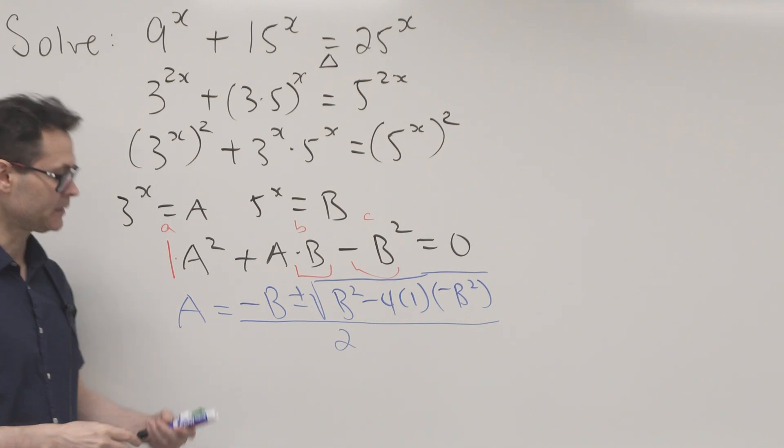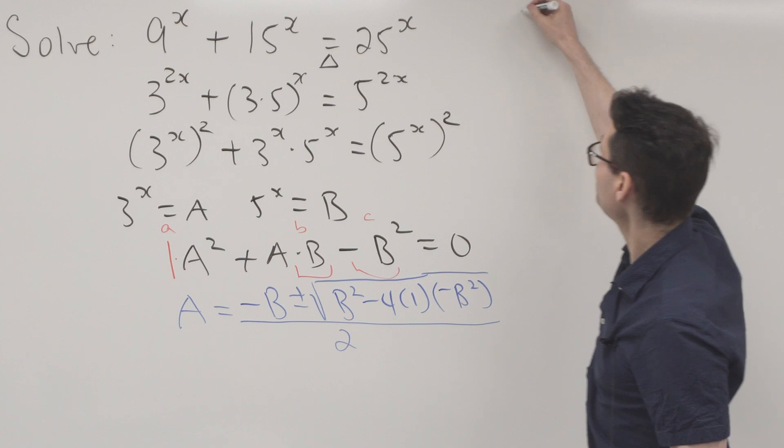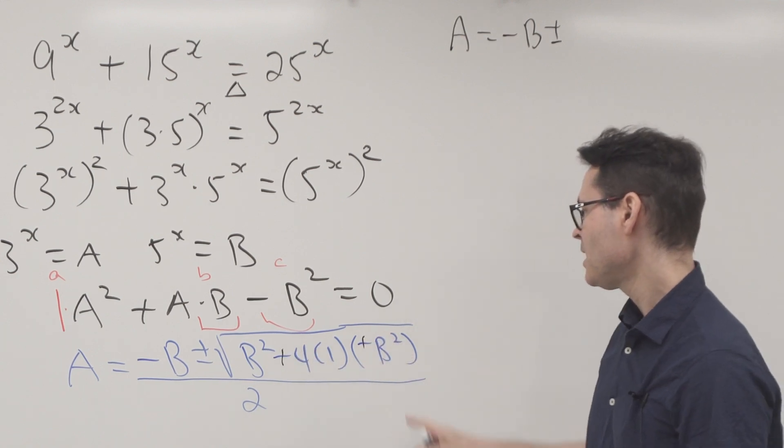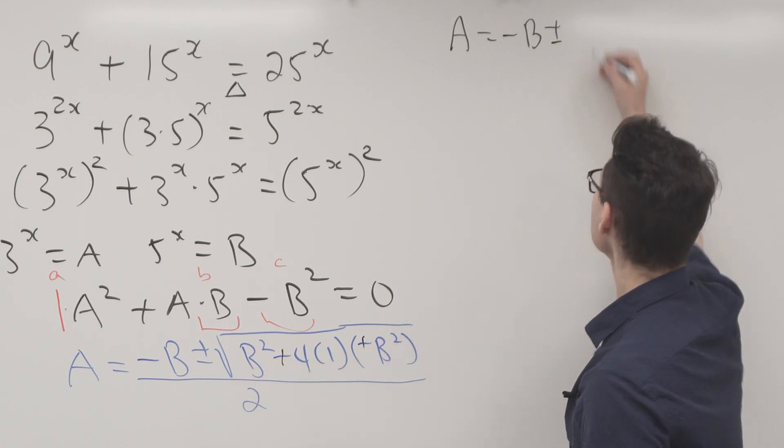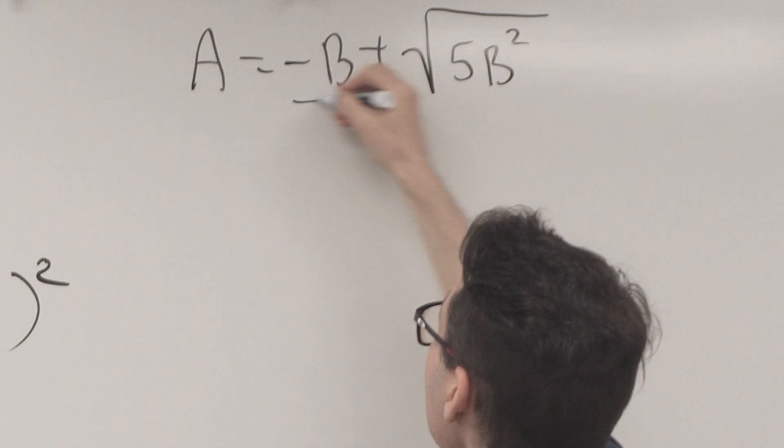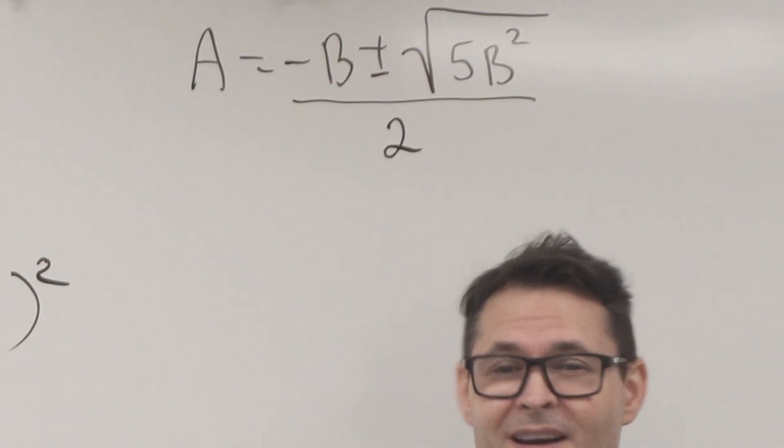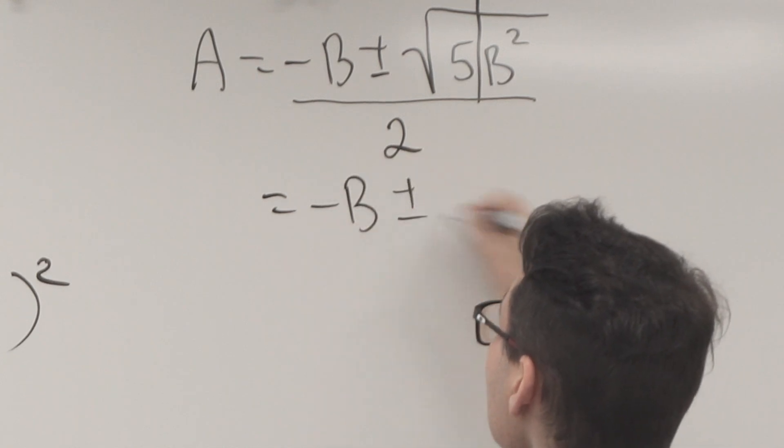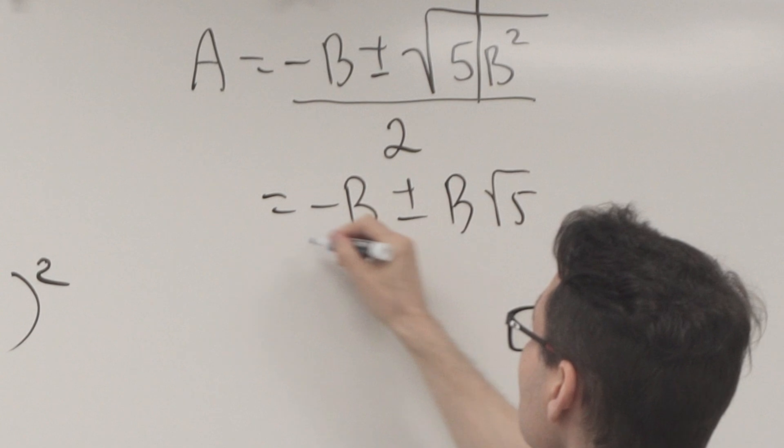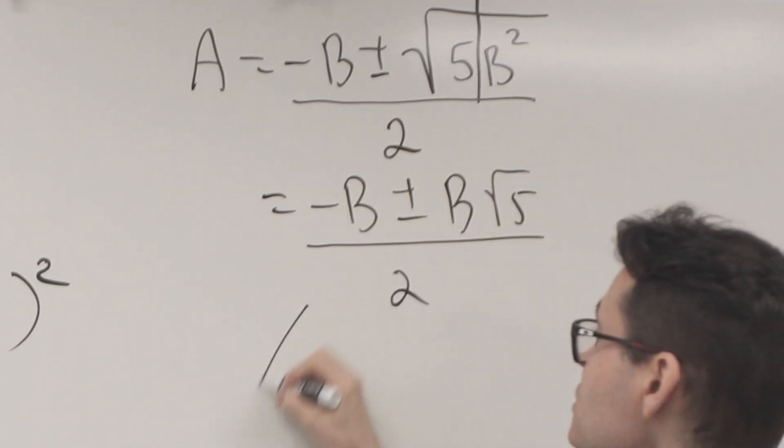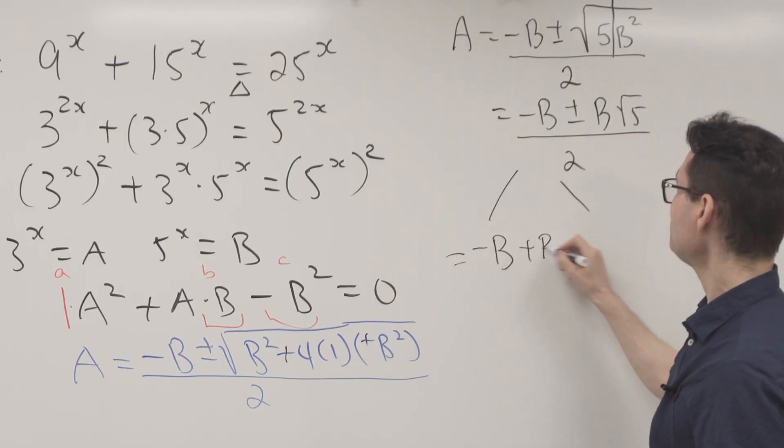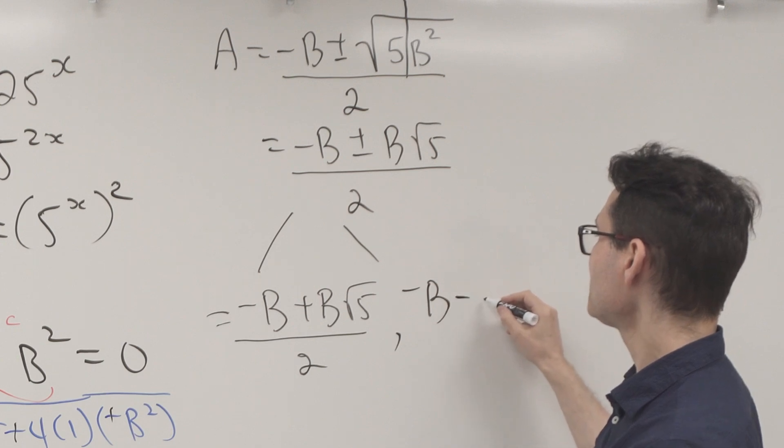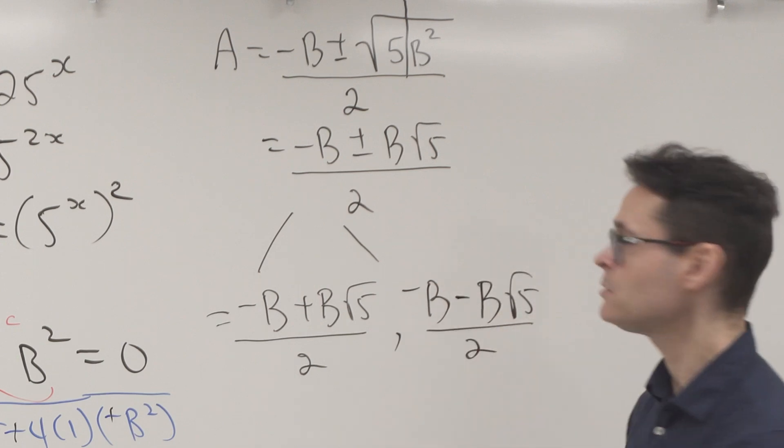Cleaning this up: that's a negative times a negative which is positive. That gives 4B² + B² = 5B². So A = [-B ± √(5B²)] / 2. This reduces to A = [-B ± B√5] / 2. This gives two solutions: A = (-B + B√5) / 2, and A = (-B - B√5) / 2.